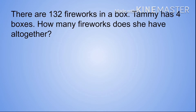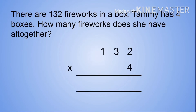There are 132 fireworks in a box. Tando has 4 boxes. How many fireworks does she have altogether? Our equation is 132 times 4. Step 1: times our multiplier, which is 4, by our unit, which is 2. So 2 times 4 equals 8.